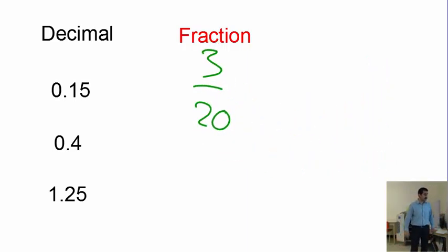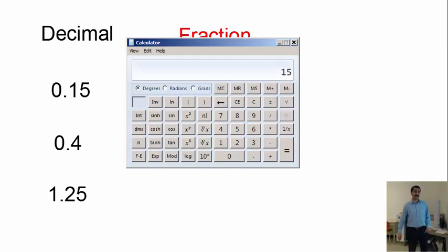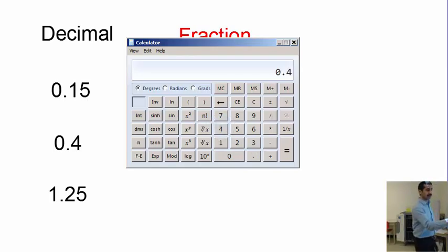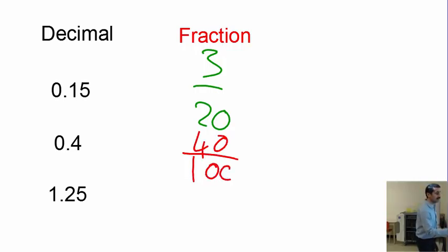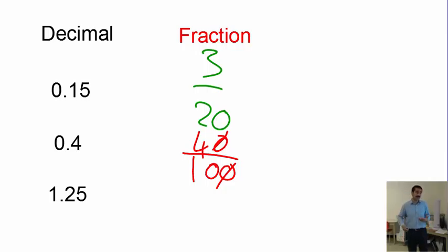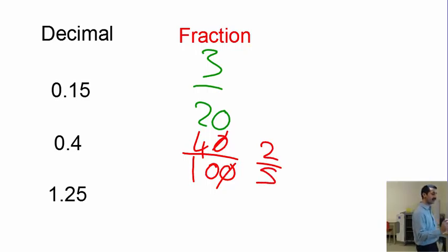Next: 0.4. Multiply 0.4 by 100 to get 40. So we have 40 over 100. Now simplify — cancel the zeros to get 4 over 10, and since both are divisible by 2, that simplifies to 2 over 5.